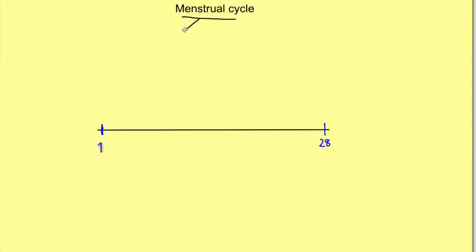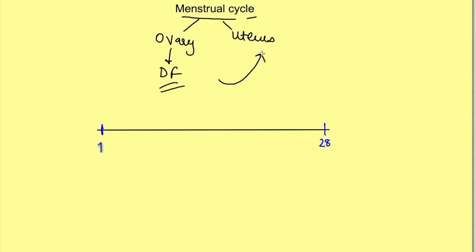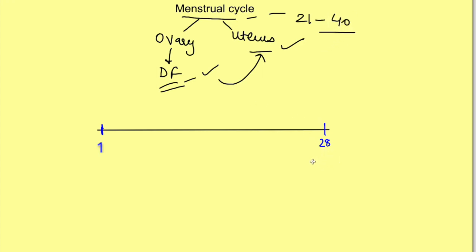The menstrual cycle refers to the cyclical changes which occur in the ovary and uterus every month in a repeatable manner. It causes development of follicles and prepares the uterus for implantation if there is fertilization of the released ovum. The follicular development, release of ovum, and uterine changes are all interlinked. The duration of this menstrual cycle may range from 21 to 40 days; for understanding we will take an example of 28 days.